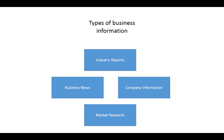Company information refers to information about specific companies. For public companies, it can be easy to find detailed financial reports and analysis, executives, and even internal evaluations of their strategy and performance. For smaller companies and any private company, there are fewer regulations on what information they have to report, and oftentimes companies will guard this information from being publicly available.